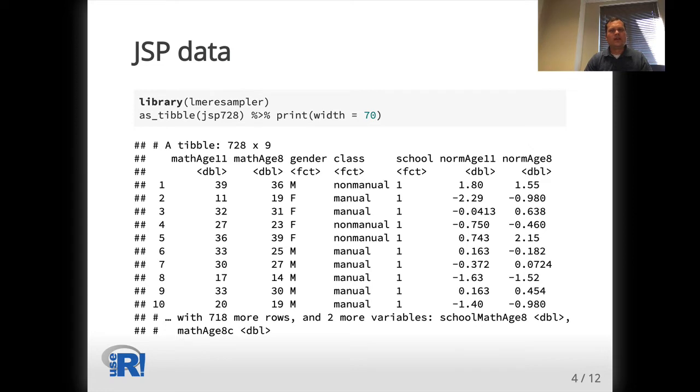As a first example, let's consider the Junior School Project or JSP dataset provided by LME resampler. This dataset is discussed in Goldstein's book on multilevel modeling. The dataset is comprised of measurements taken on 728 elementary school students across 48 schools in London.